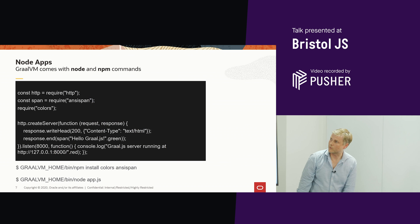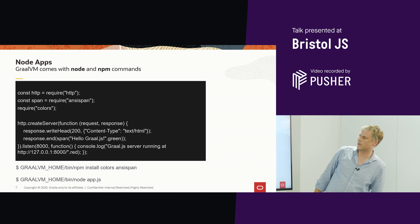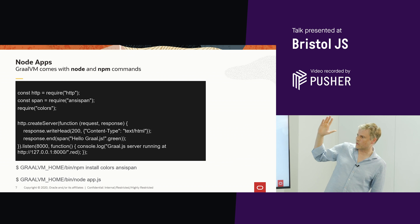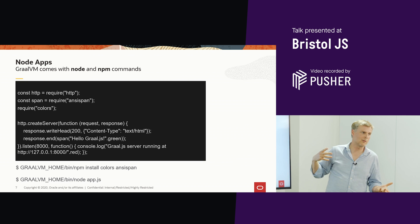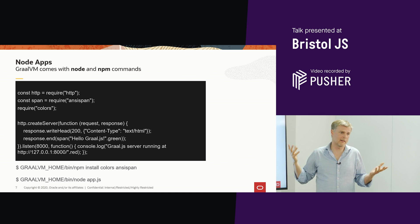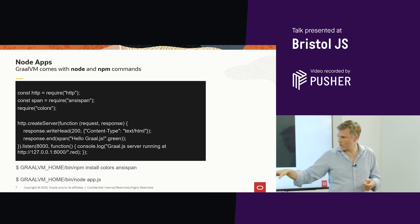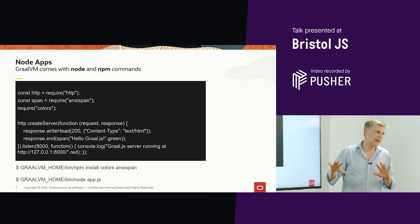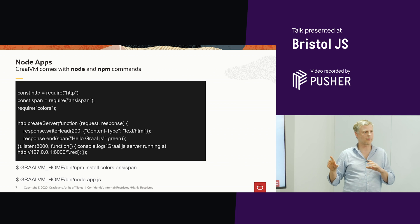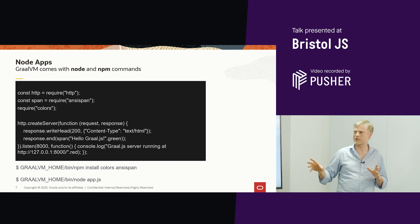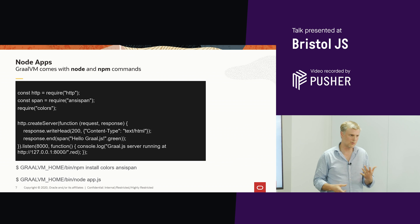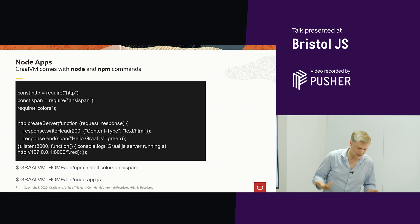As an example, this is just a bit of Node — an Express app I pulled off the web and stuck into our Node implementation, ran it, and it worked. NPM works, and there's a bit of setting up command line options and environment variables to point to the right version of Node. But you can still use NPM, you can still use any of the tools that you normally use, and Node works.